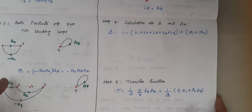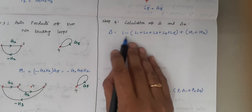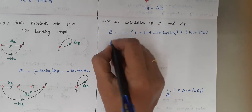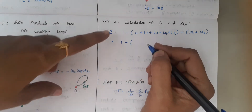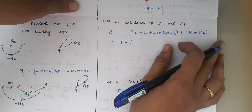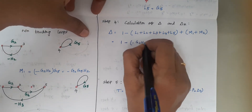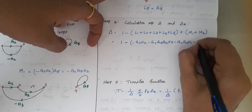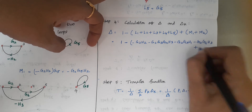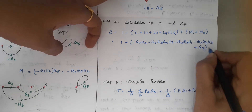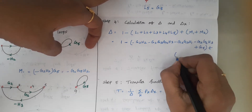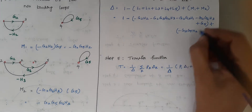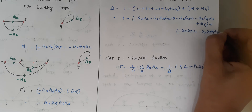Step 4 is calculating delta (Δ). The formula is: Δ = 1 − (sum of individual loop gains) + (gain product of non-touching loop pairs). Substituting: Δ = 1 − (−G2H2 − G2G3G4H3 − G2G3H1 − G2G6H3 + G5) + (−G2G5H2) + (−G2G5G6H3).